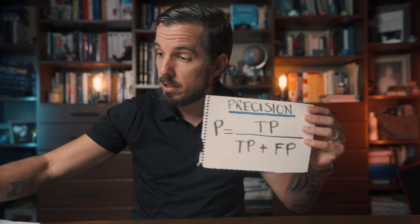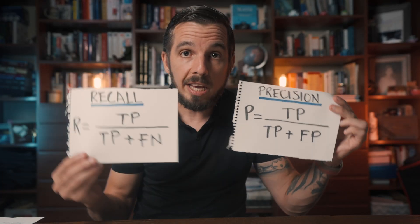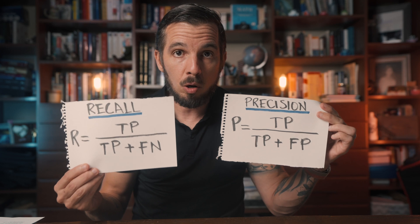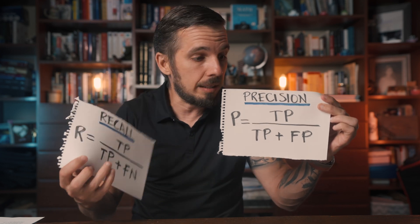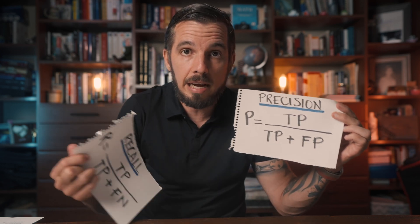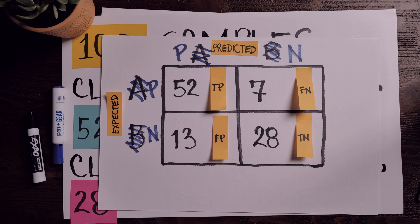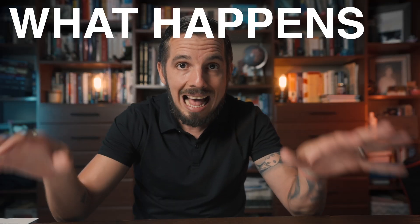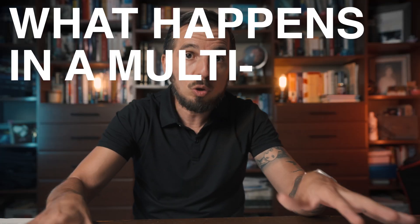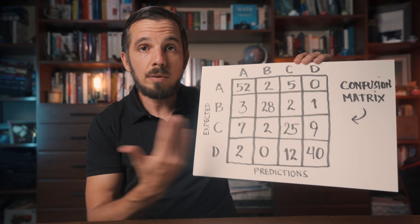Now I can compute the precision and recall of my model by simply lifting each one of these values out of the confusion matrix. This is great, but we're only working with two classes. What happens in a multi-class classification problem?